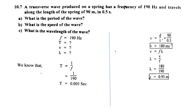We have the formula V is equal to F lambda. The wavelength can be separated as V divided by F. With wave speed 180 meters per second divided by frequency 190 hertz, we get the wavelength.